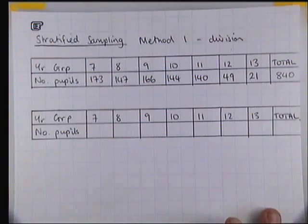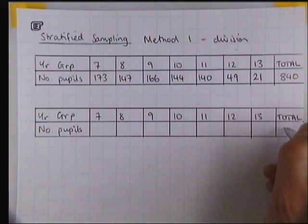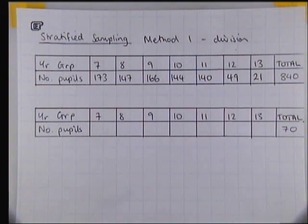That means there are 840 students in the population of the school. We use the word population to describe everybody that we're talking about in this investigation. We've got 840 people in the population. The sample that we want to take has got a total of 70.